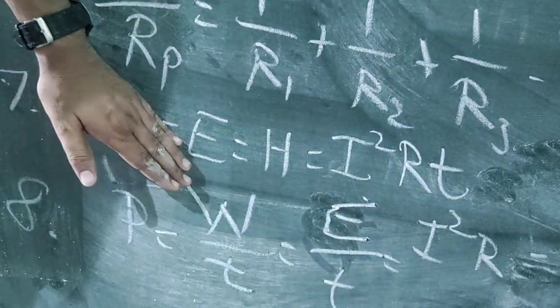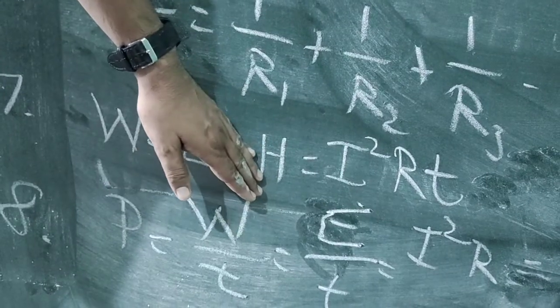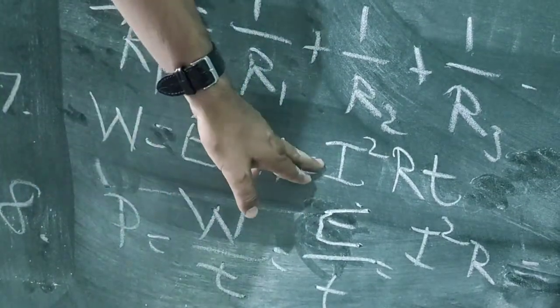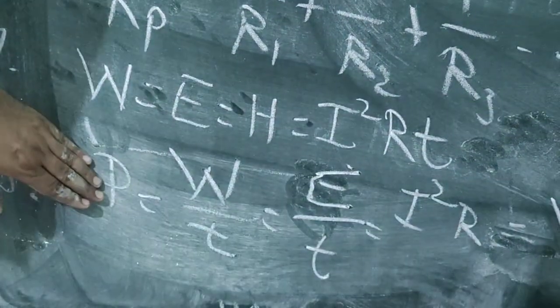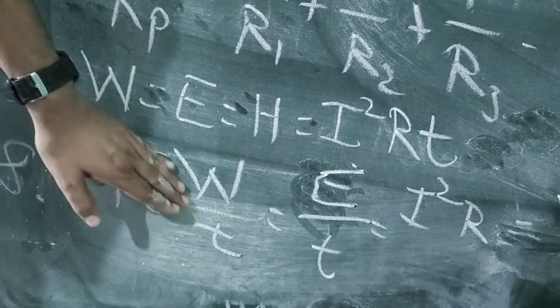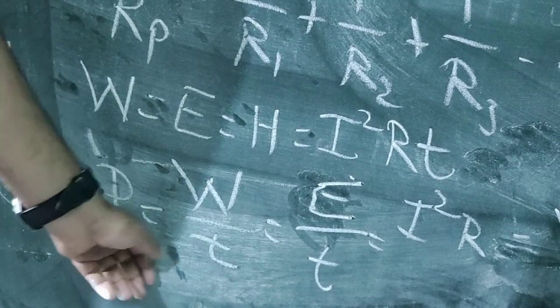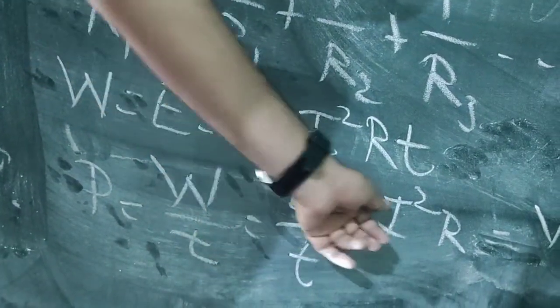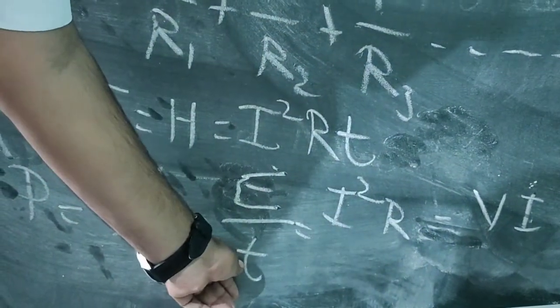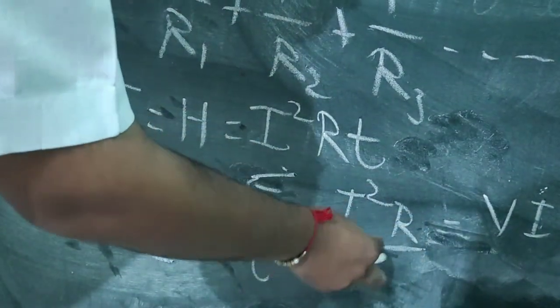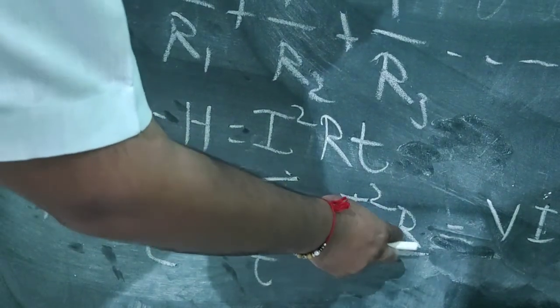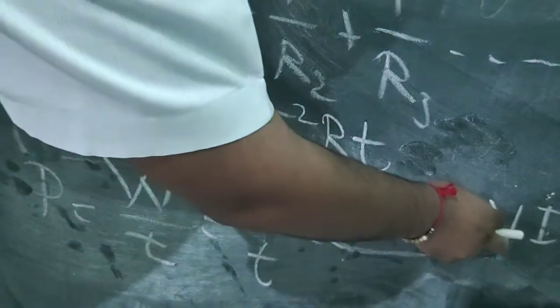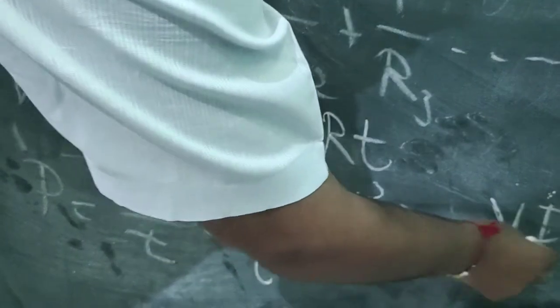Work is always equal to energy, and energy is always equal to heat energy. The formula we get from Joule's law is W = I²Rt. For power, since power is the rate of doing work, P = W/t = energy/t. Substituting energy as I²Rt and cancelling t, the formula for power becomes P = I²R. Another formula: if we substitute R = V/I, we get P = VI.